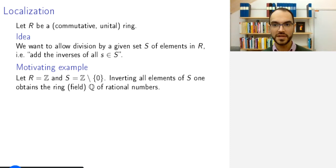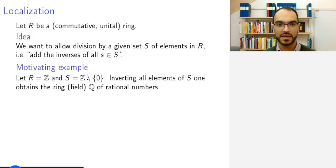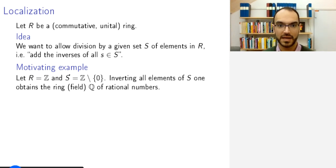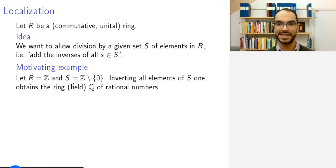The motivating example that you have seen before is the construction of the rational numbers from the integers. You start with the integers and look at the set of all non-zero integers — this is our set S — and we want to add to Z the inverses in some way of all elements in S. But how is this done formally? What does it mean to add an inverse?